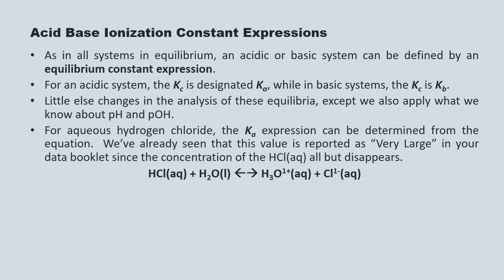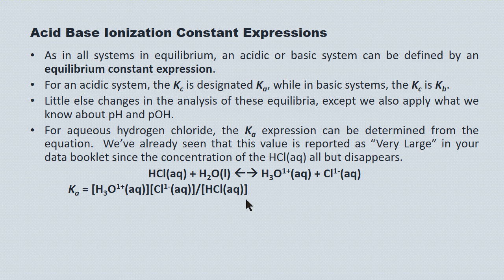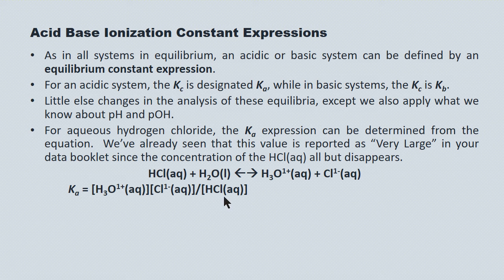For aqueous hydrogen chloride, the Ka expression can be determined from the chemical equation just like this. Ka equals the molar concentration of the products over the molar concentration of the reactants. In this case, water is excluded because it's in liquid phase. If you look at your table of relative strengths of acids and bases, you see that the value of Ka is reported as very large. What that means is that the concentration of HCl all but disappears, all but goes to zero, because it's such a very strong acid.